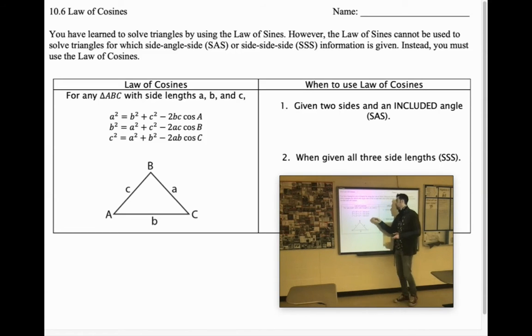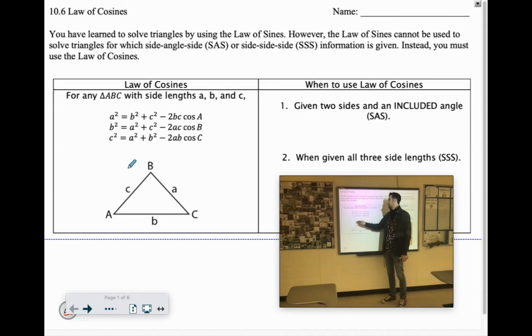So look at these formulas. These are crazy, very similar to the Pythagorean theorem though, where you have one side squared equals the other two sides squared added together. The difference is you have this correction because that only works for right triangles. So the correction is they have this minus 2 times the same sides times the cosine of whatever's on the other side. And it works for all the sides.